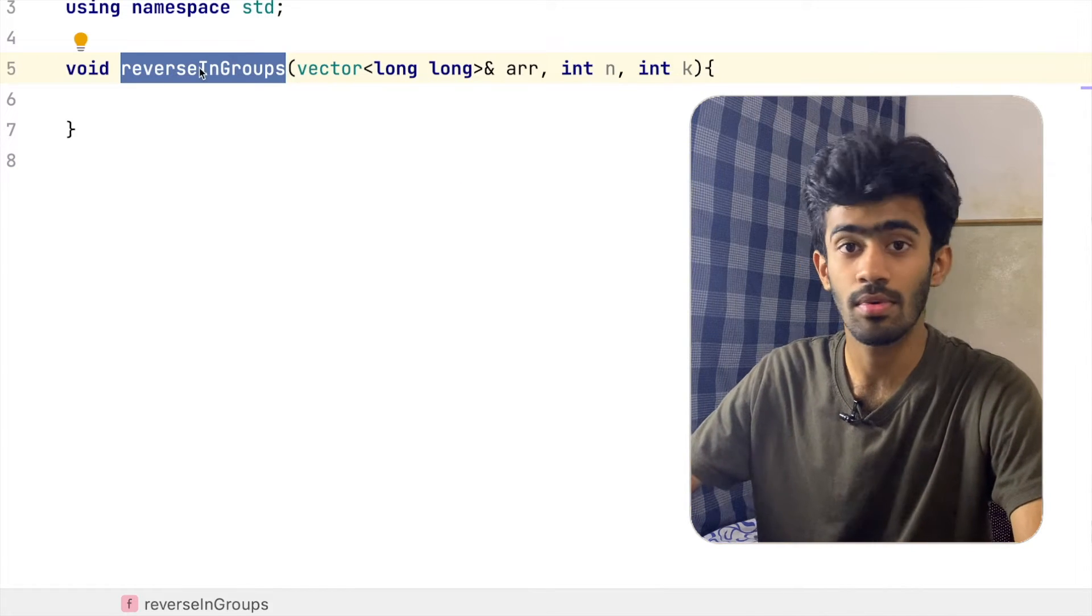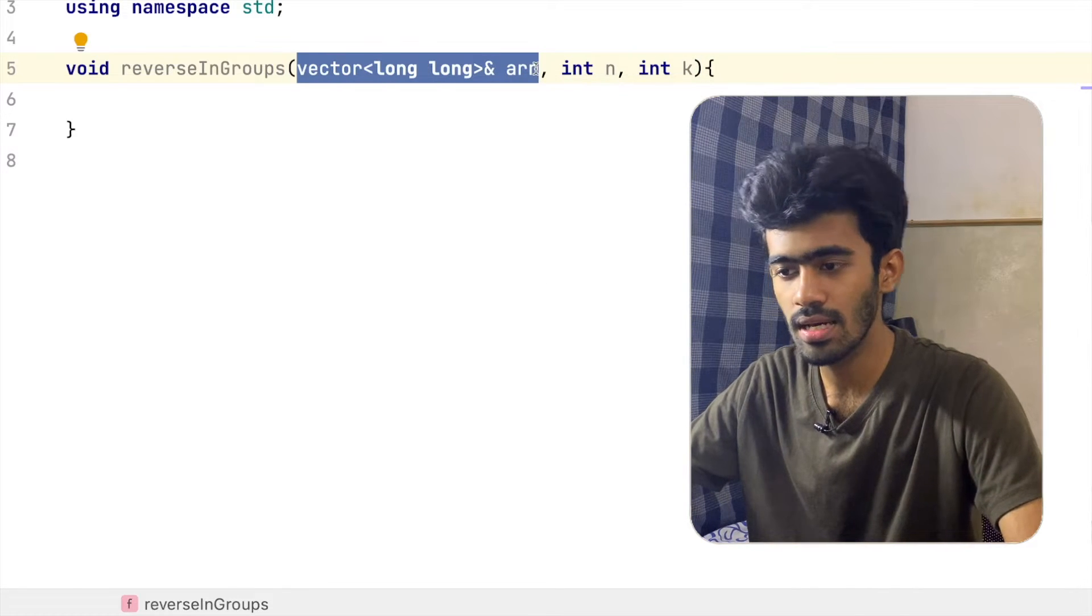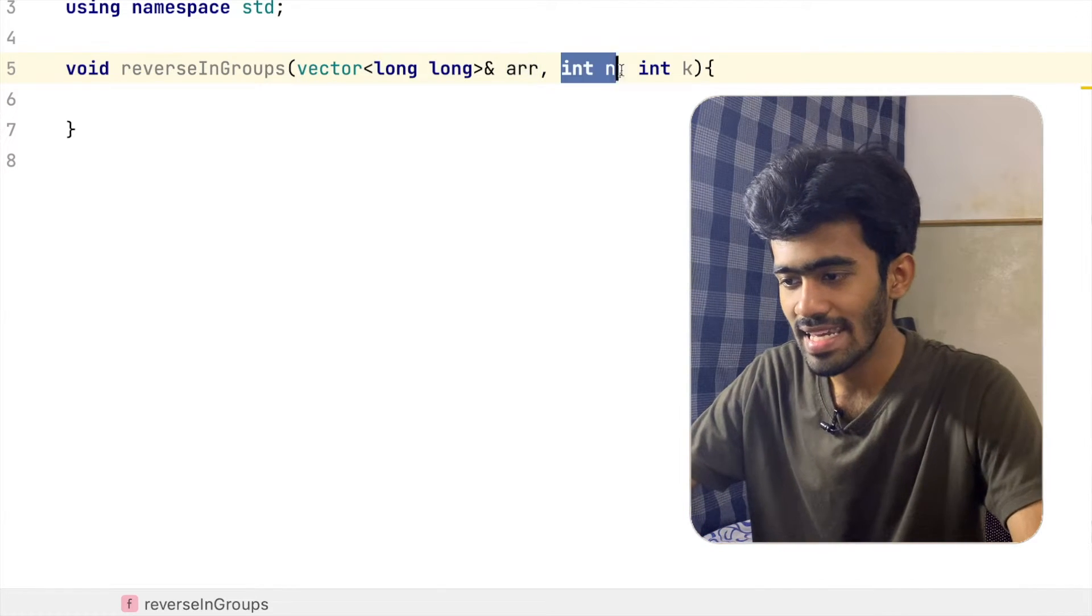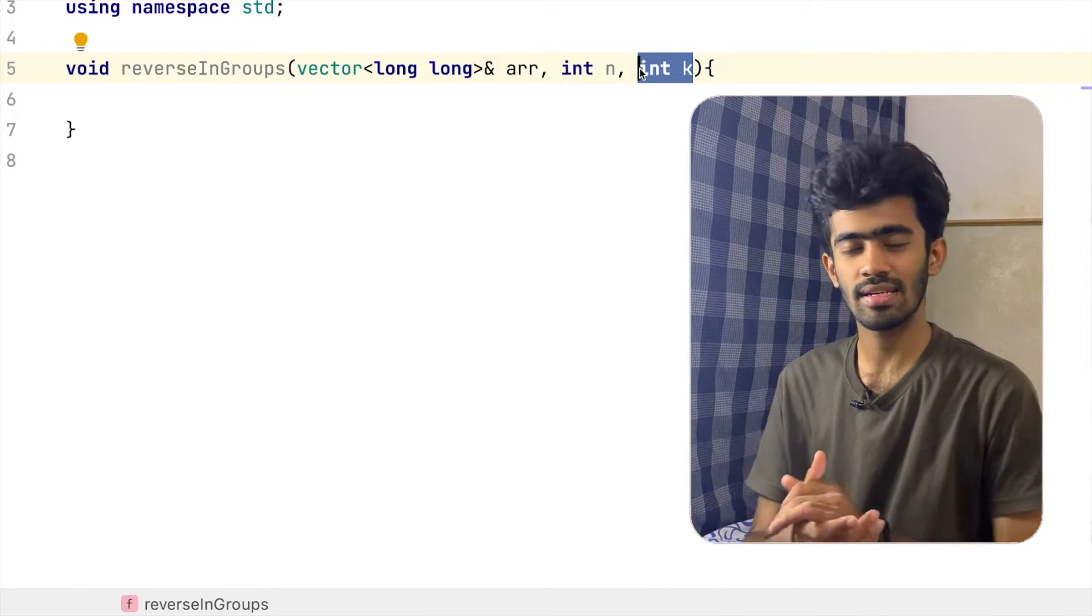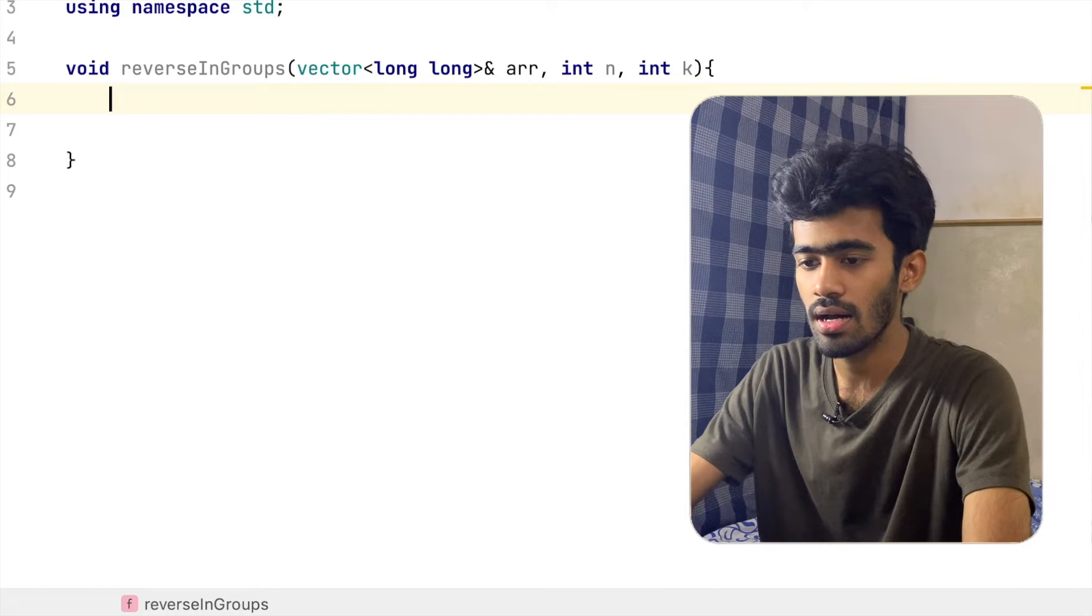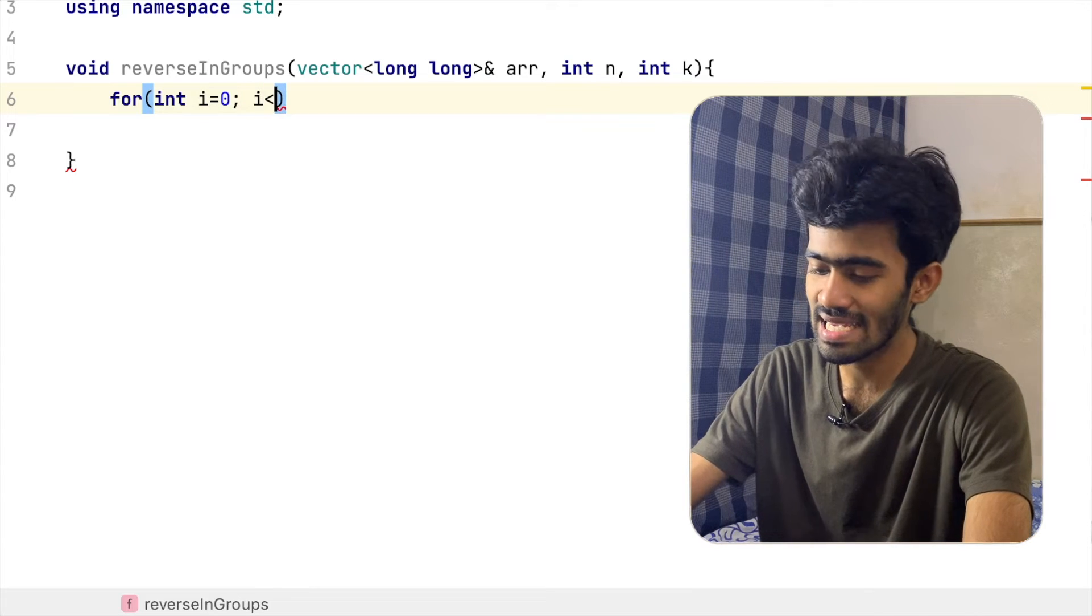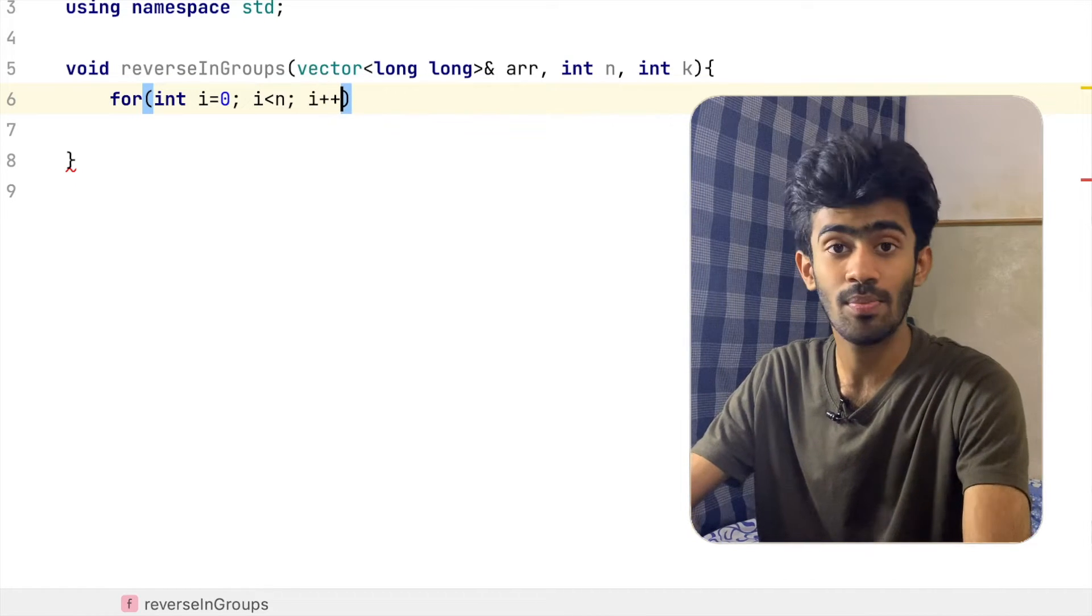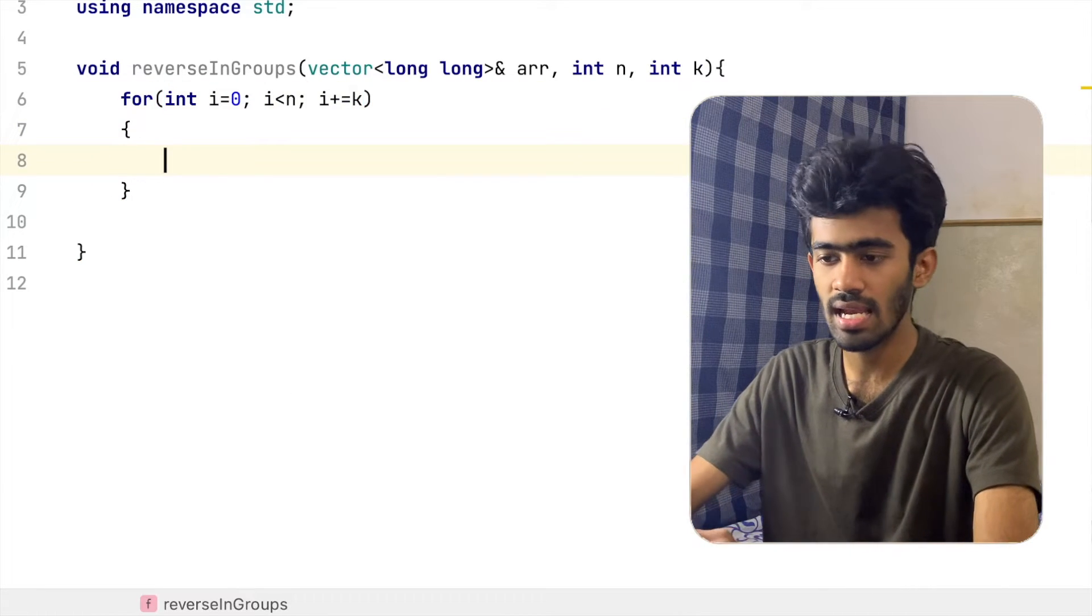Here is the reverse in groups function. In this function, there are three arguments: a vector of long long data type as the array, N as the array size, and K as the subgroup size. First, we will use a for loop. For loop: int i equals 0, then i less than N. We usually use i++, but in this case, we use plus equals K because we already skip K elements.